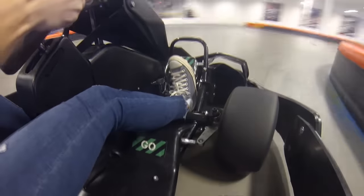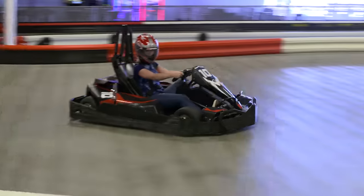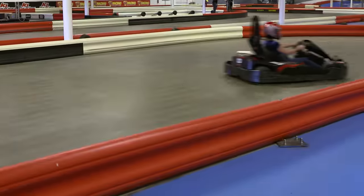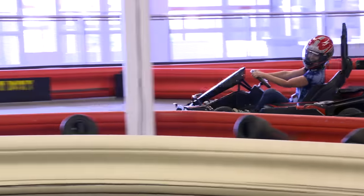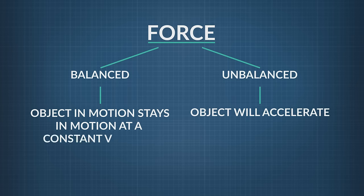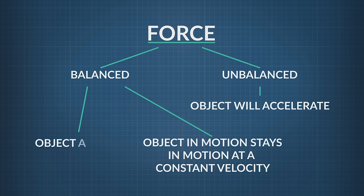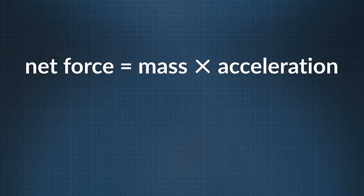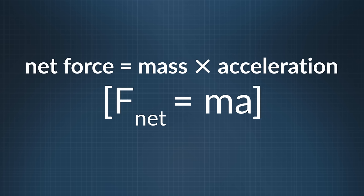Forces that could slow the cart include air resistance, friction between the tires and the track, and friction of all the moving parts of the cart's engine and drivetrain. If I give it just enough gas to counter those forces, I'll move at a constant velocity because the forces are balanced. So remember: net force equals mass times acceleration, written as F-net equals m times a.